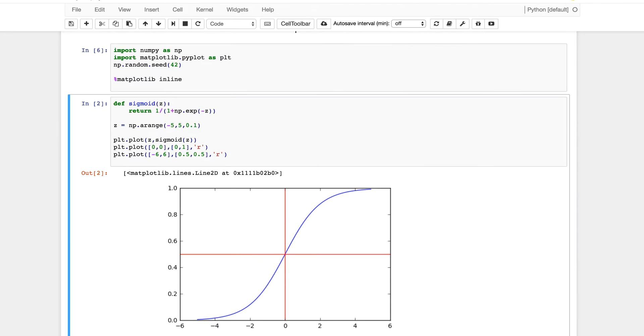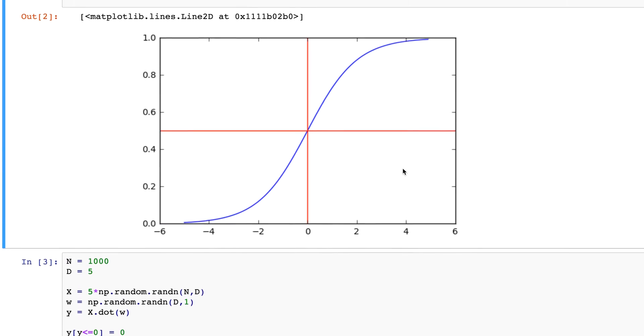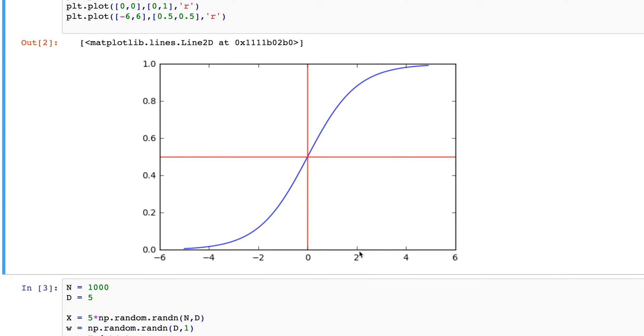So we're going to import numpy and just for future reference I want to show you what the sigmoid function looks like. So it takes in a number, negative or positive, doesn't really matter, and it squeezes it into a number between 0 and 1. Notice how negative 6 is really close to 0 and positive 6 is really close to 1.